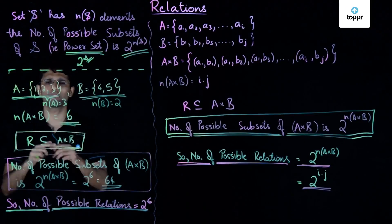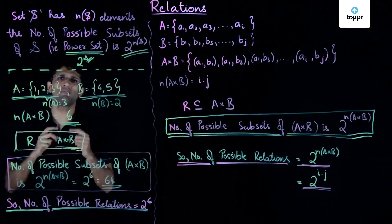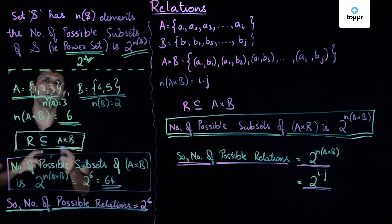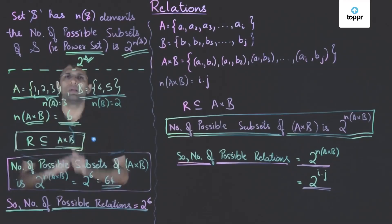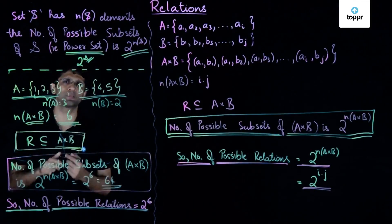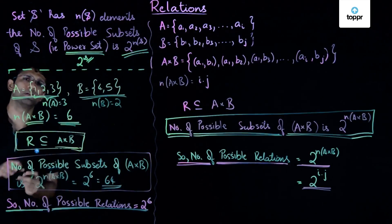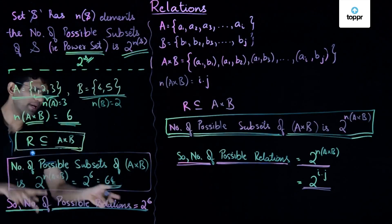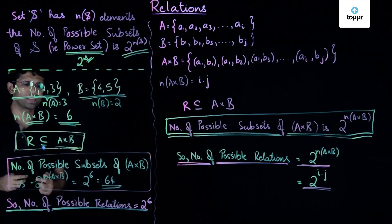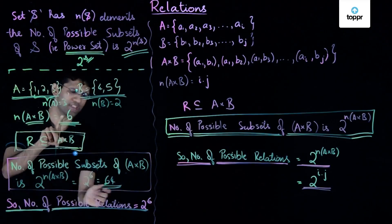We now want to find the number of possible subsets of this set. Since A cross B consists of 6 elements, the maximum possible number of subsets of that set, including the null set and the set itself, is equal to 2 raised to 6. So the maximum number of different possible subsets we can form from A cross B is 2 raised to 6, which is 64.